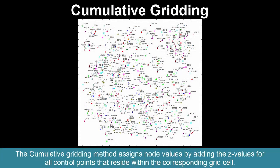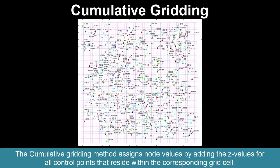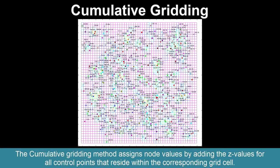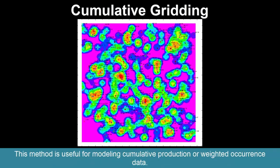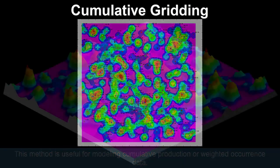The cumulative gridding method assigns node values by adding the Z values for all control points that reside within the corresponding grid cell. This method is useful for modeling cumulative production or weighted occurrence data.